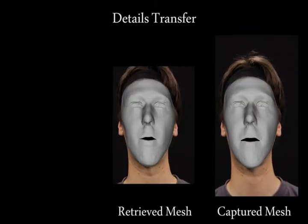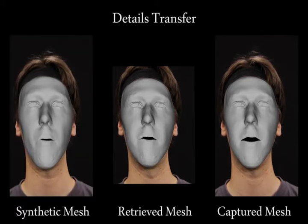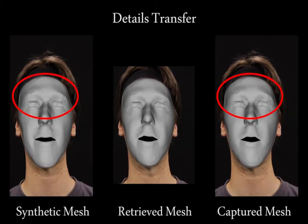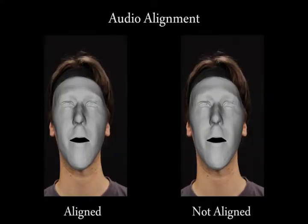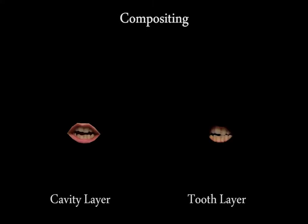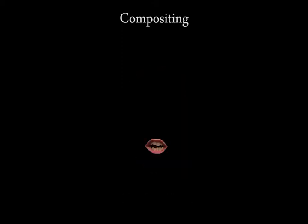In the second step, fine-scale skin detail in the mouth region is transferred from a retrieved performance-captured mesh with a similar mouth expression. The detail in the rest of the face is preserved. We ensure better audio-visual alignment by enforcing lip closure for certain consonants. We then create a convincing mouth interior using 2D image warping and a 3D tooth proxy. The synthesized mesh is rendered in the target camera using the estimated scene lighting and dense albedo, and a final composite is created.